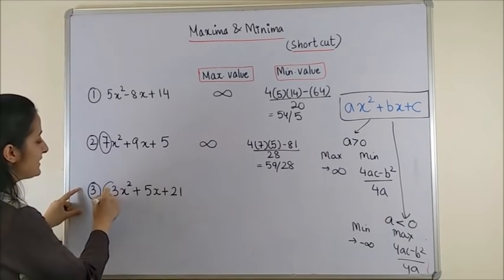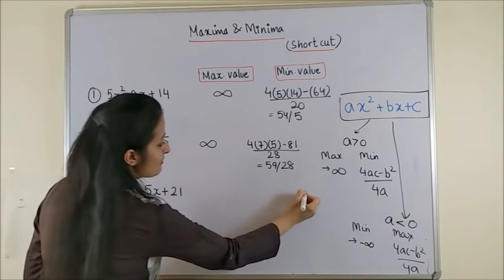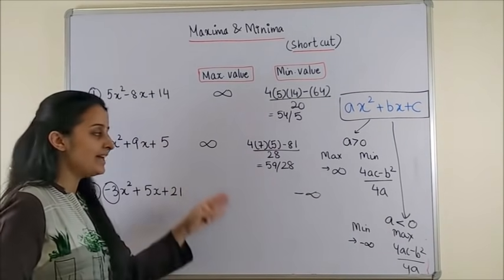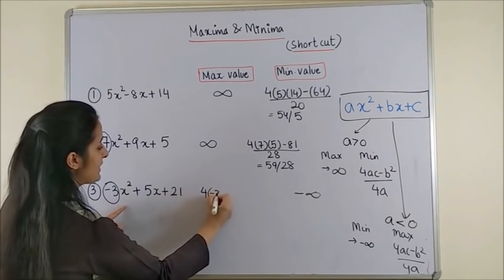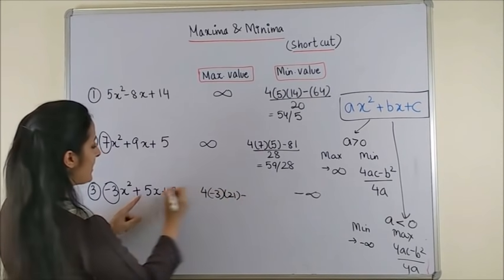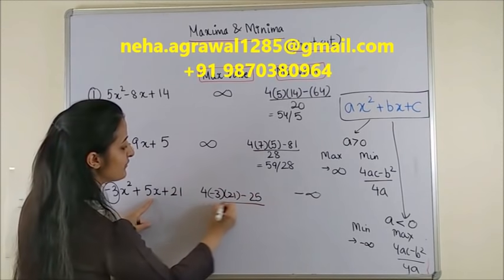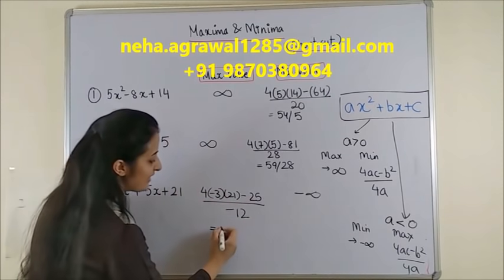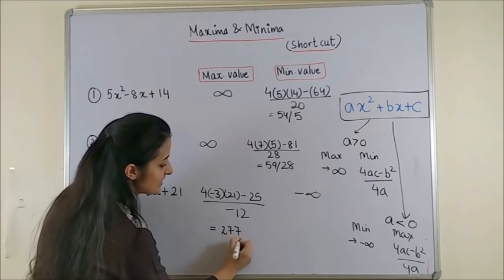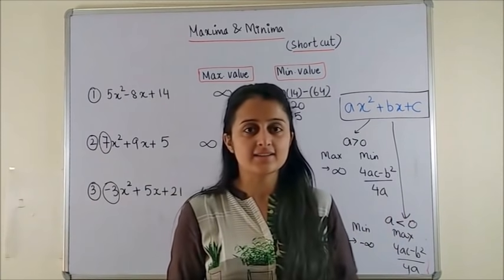So, like for the case in this, minus 3, so minimum value approached minus infinity. And for maximum, we did 4A into C minus B square, which is 25, upon 4A, which is minus 12. On simplifying everything, we got 277 by 12. That was the answer.